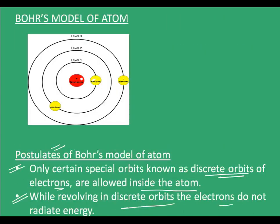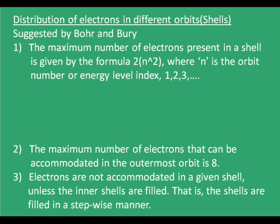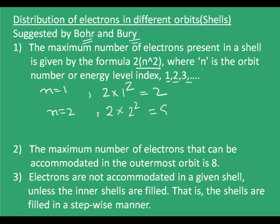These orbits are characterized by their orbit number, where the first orbit is n=1, the second orbit is n=2, and the third orbit is n=3. Now let's see how electrons are distributed in different orbits. This model was suggested by Bohr and Bury. The maximum number of electrons present in a shell is given by the formula 2n², where n is the orbit number or energy level index. For n=1, the number of electrons it can hold is 2×1²=2; for n=2, it is 2×2²=8; for n=3, it is 2×3²=18, and so on.